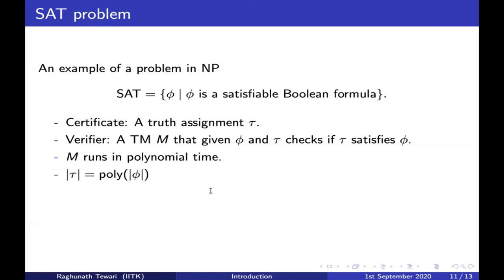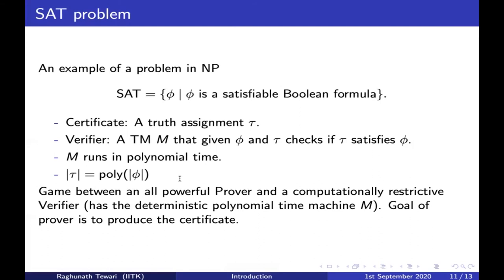We show that SAT is in NP very trivially. The certificate is a truth assignment τ — an assignment of zero or one to each of the n variables, so it's a boolean string of length n. The verifier is a Turing machine that, given φ and τ, checks whether τ satisfies φ by plugging in the values of τ to each variable and evaluating whether the formula outputs one or zero. This verifier runs in polynomial time, and τ has linear length, proving SAT belongs to NP.